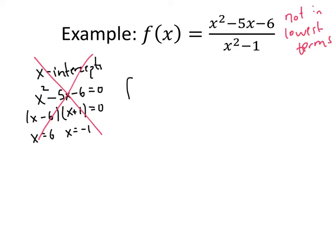To figure out how to get our function to lowest terms, we need to factor the top and factor the bottom. Good news, we've already factored the top. It's (x - 6)(x + 1). And on the bottom, we have a difference of two squares. So we have (x - 1)(x + 1). And we have a common factor of (x + 1) on the top and the bottom. So we can divide those out. That gives us (x - 6) divided by (x - 1).